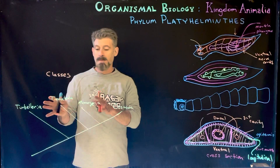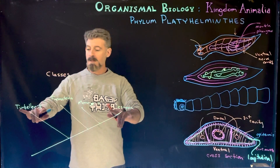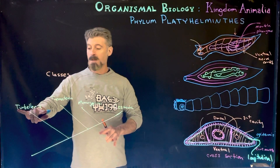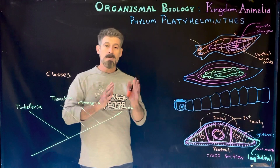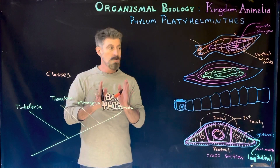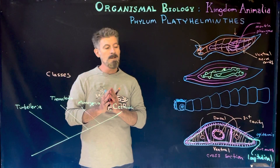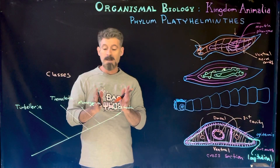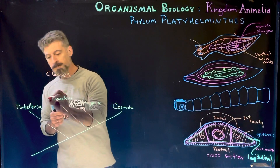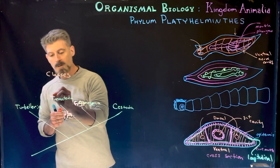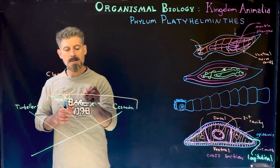Monogenea is often a small group, so we're really focused on the three major groups: Turbellaria, Trematoda, and Cestoda. The Trematoda are often broken into two separate groups based on their structures and life cycles because they tend to be parasites. Turbellaria tend to be free-living, but the rest are parasites.